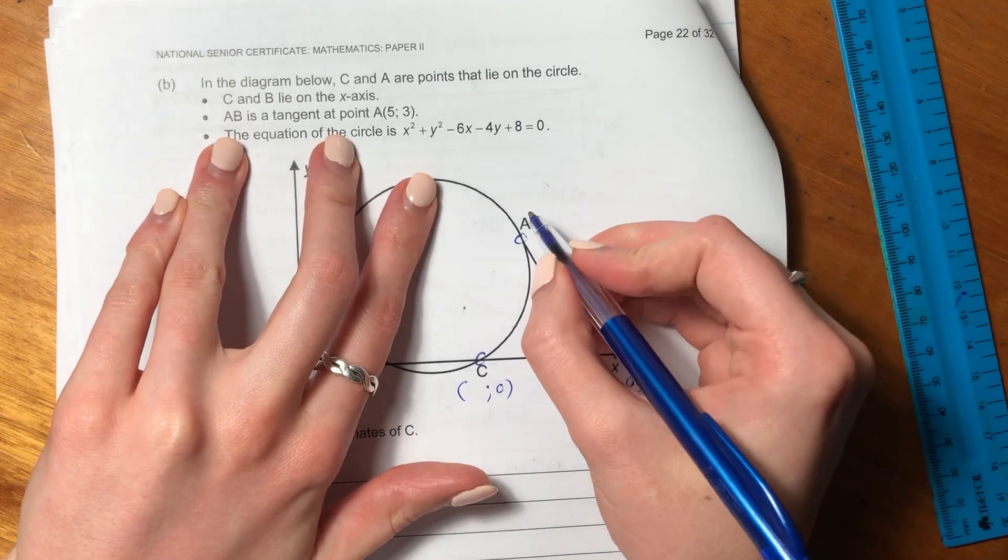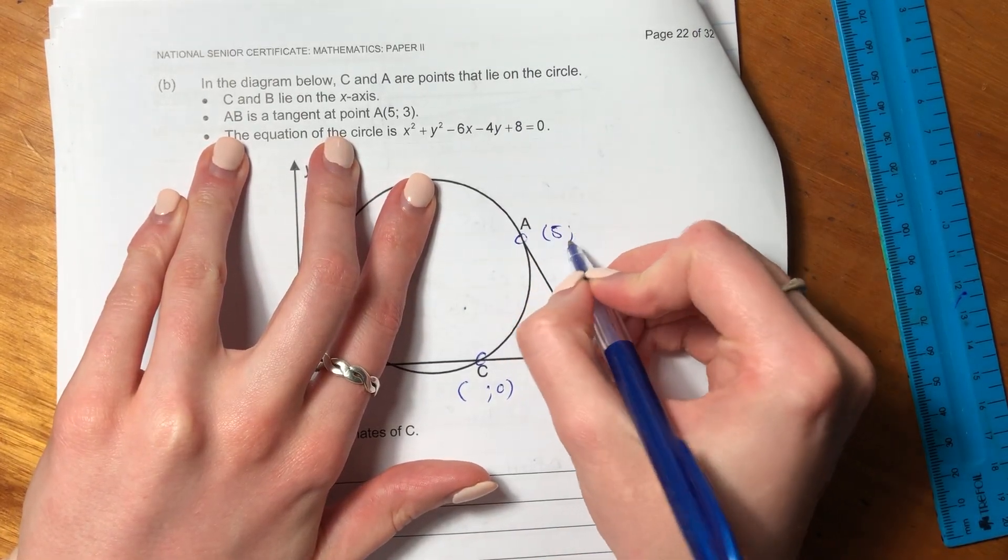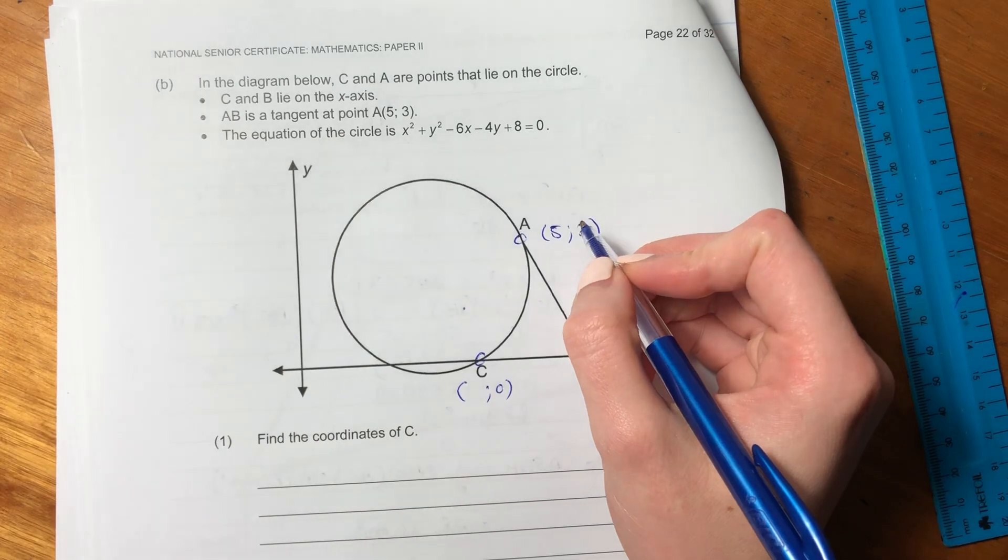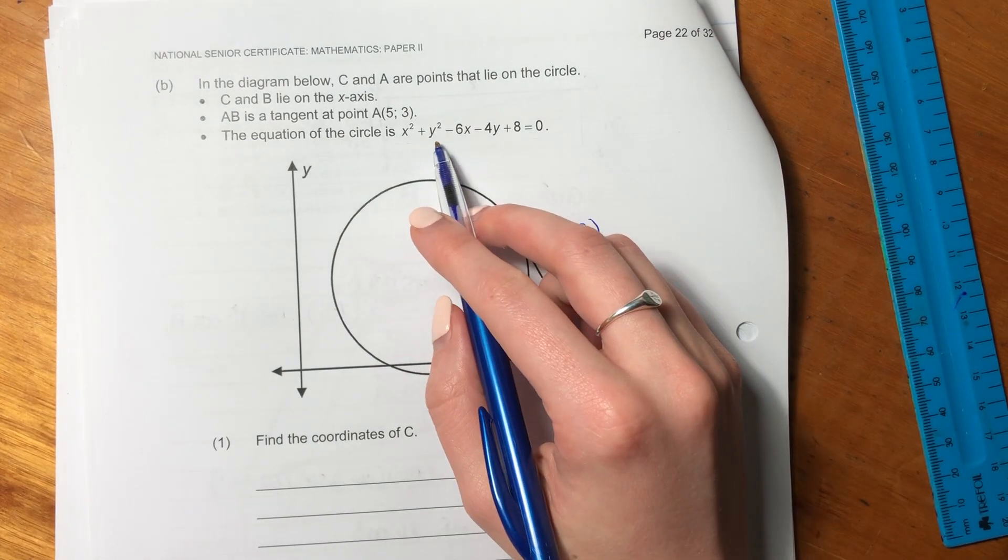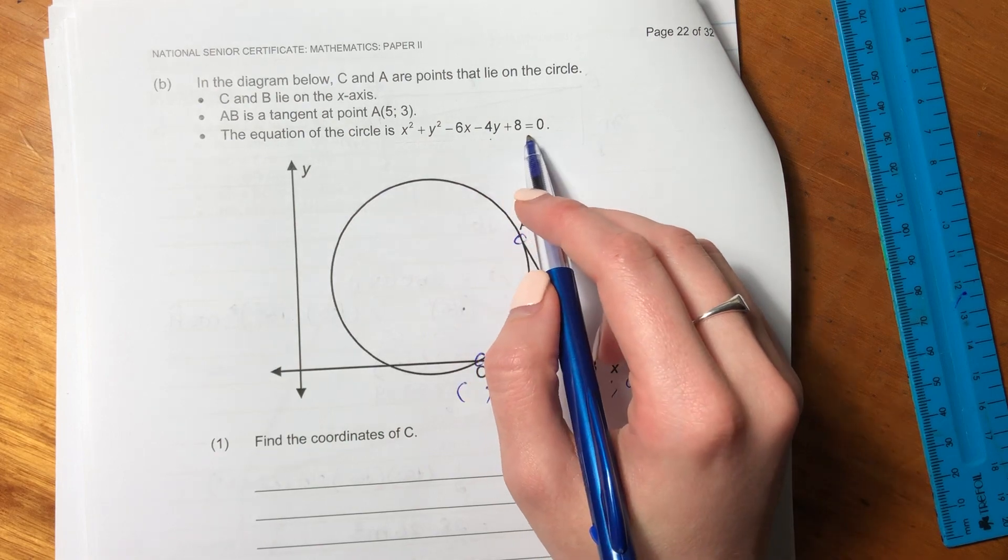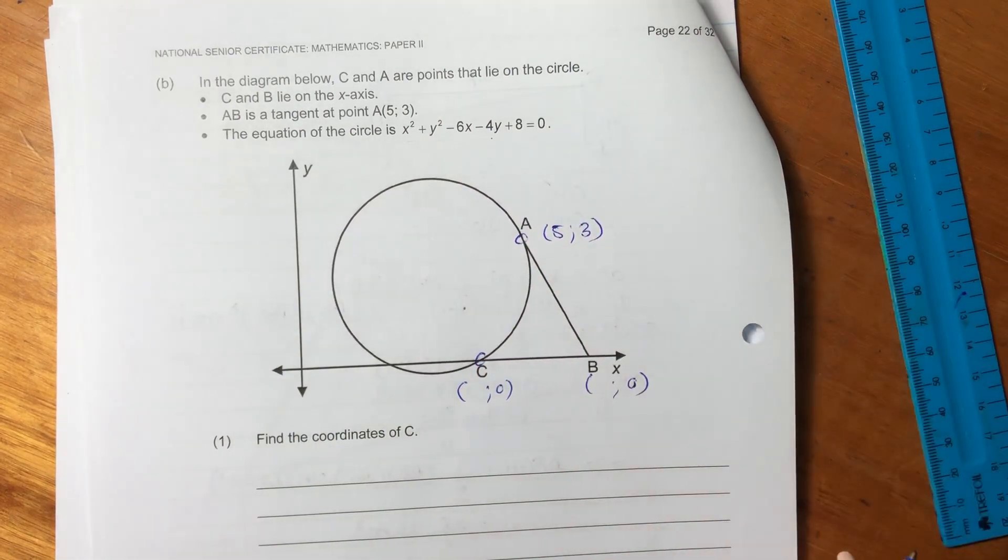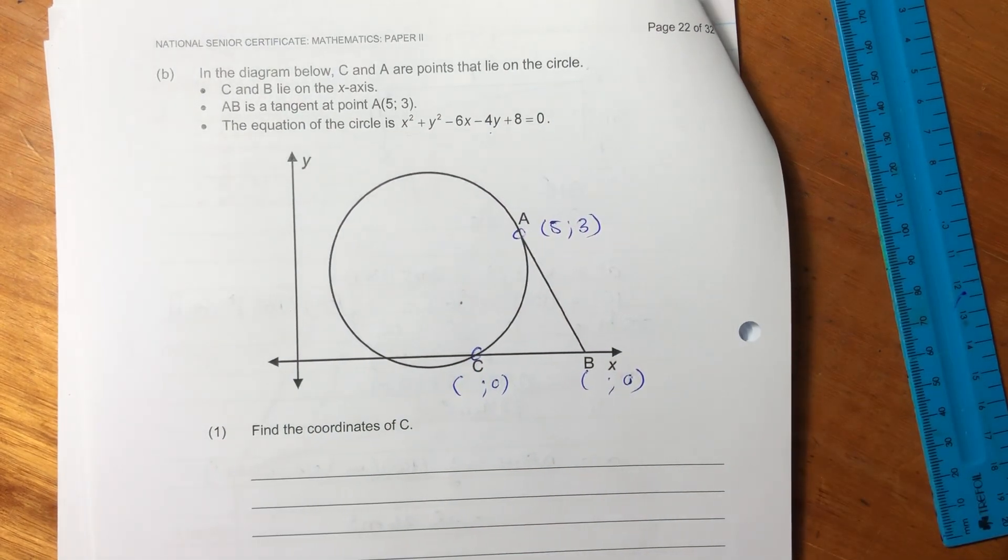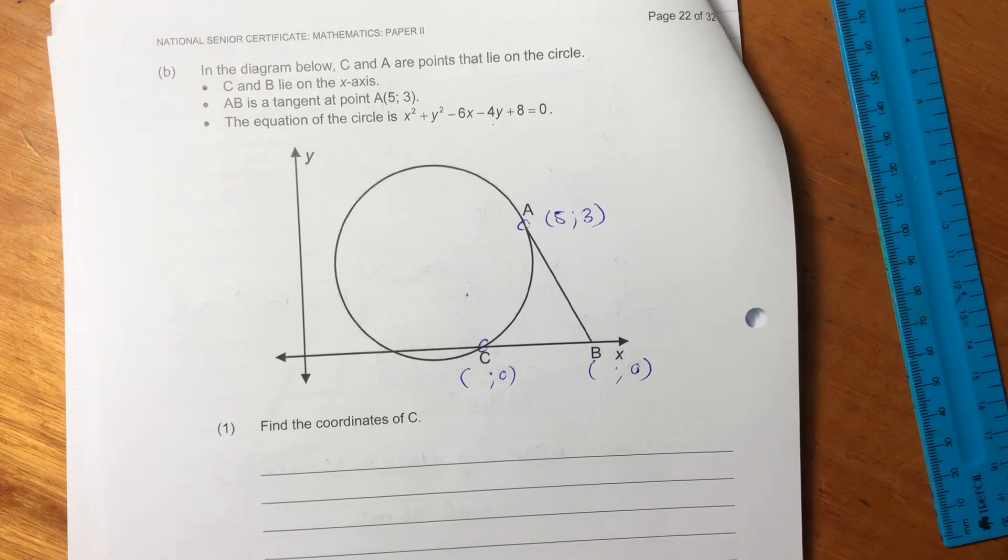AB is a tangent at point A, so A is five and three, and the equation of the circle is x squared plus y squared minus 6x minus 4y plus 8 equals zero. So we're probably going to have to reformat that to make it easier to access, but that's okay.